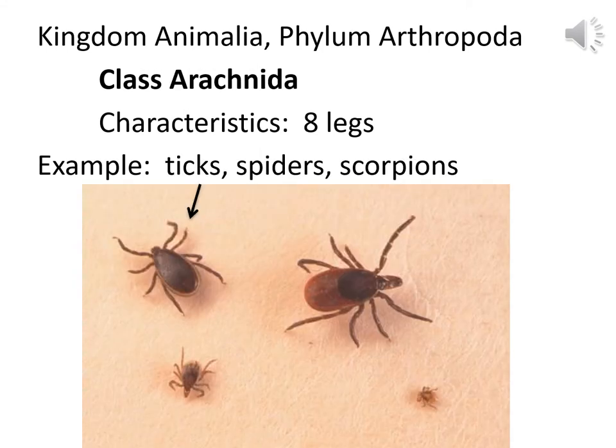Ticks, spiders, and scorpions are not insects. They're in Class Arachnida with the characteristics of eight legs. If you look closely at the ticks in the picture, they do all have eight legs — not six. Usually we talk about spiders being in Class Arachnida, but the handout does have ticks, so you should learn the ticks.